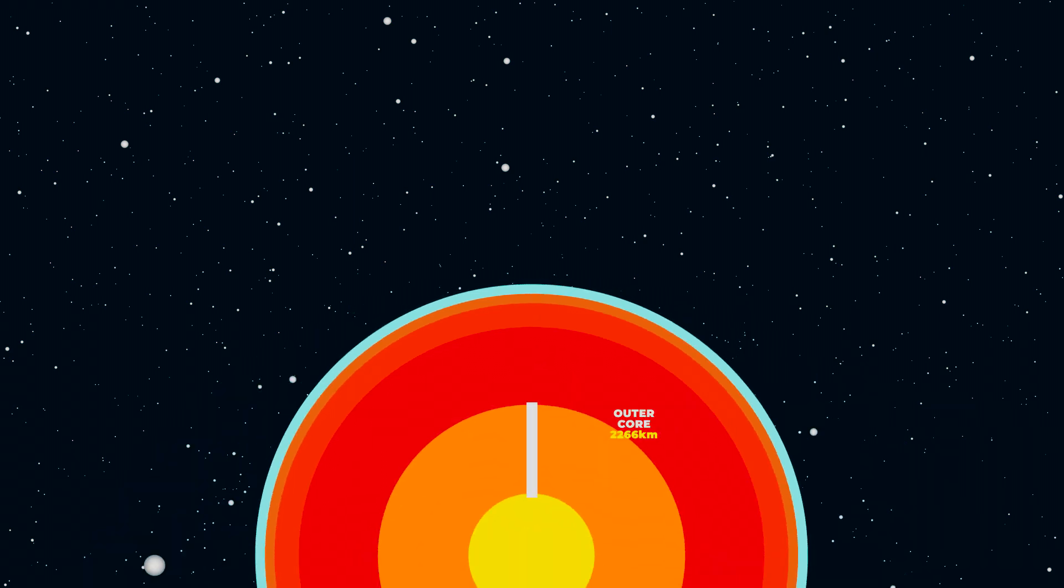The outer part of the core contains iron and nickel in a molten state at a temperature of 4,000 to 5,700 degrees Celsius. And the inner center is the inner core at a radius of 1,200 kilometers.